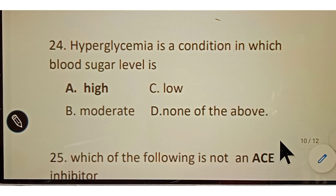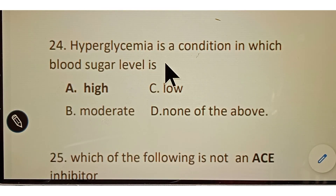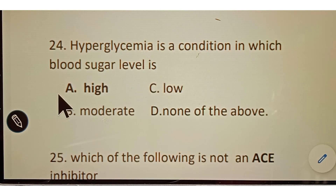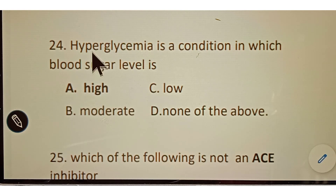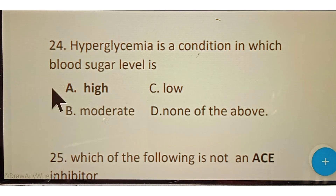Question number twenty-four: hyperglycemia is a condition in which blood sugar level is? Options given: A. High, B. Moderate, C. Low, D. None of the above. The correct answer is option A, High. Hyperglycemia means high blood sugar level.